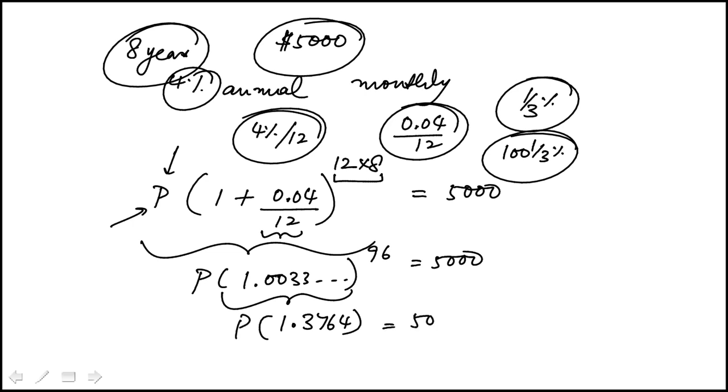And if you divide that, we get... If we divide 5,000 by that, we get P to be 3632. And if you look at the answer choices, that's closest to $3,650, which is choice D. Thank you.